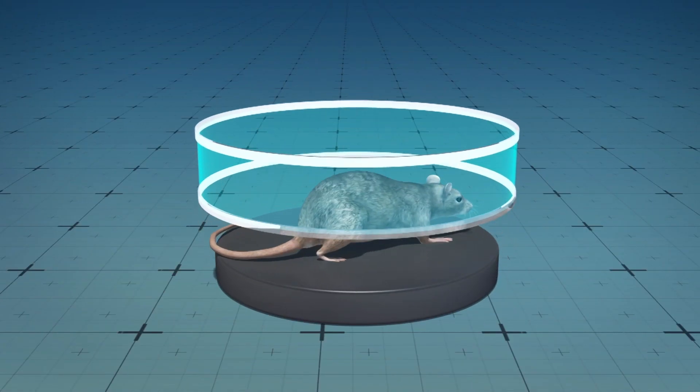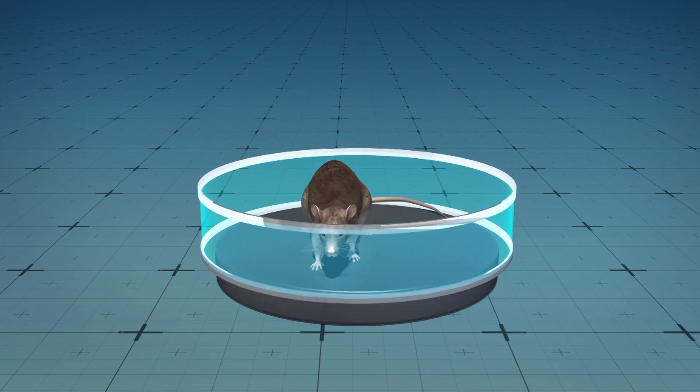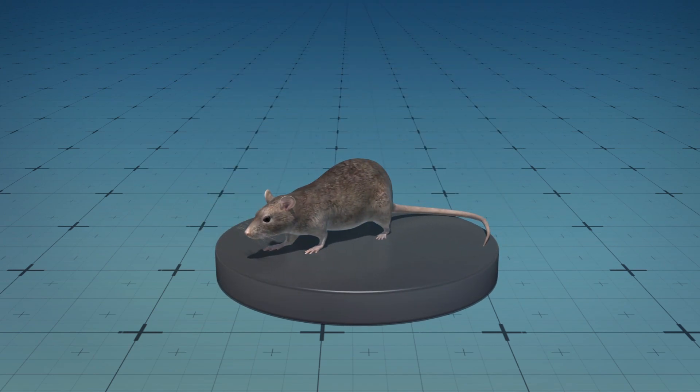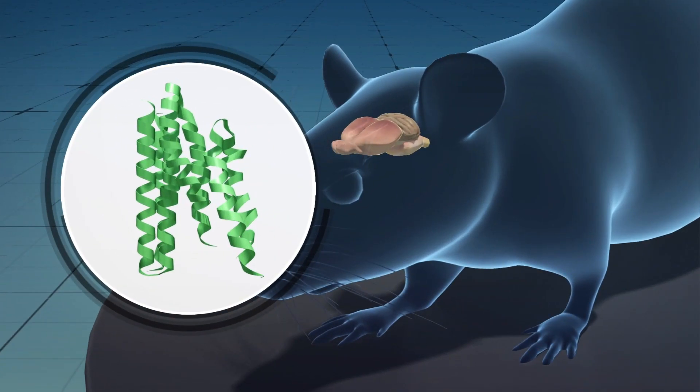Scientists from the University of Cambridge detected a molecule in mice called BMP8B. This protein controls the activation of brown fat in the brain and body tissue of mice.